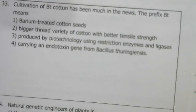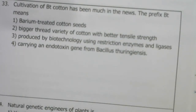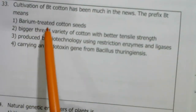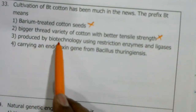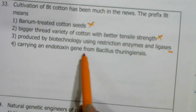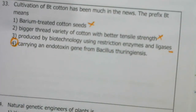The prefix Bt in Bt cotton stands for: barium treated cotton seeds — wrong; a better-trait variety — wrong; produced by biotechnology using restriction enzymes and ligases — wrong; carrying an endotoxin gene from Bacillus thuringiensis — correct. So fourth option is right.